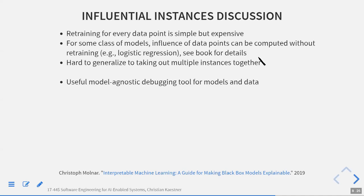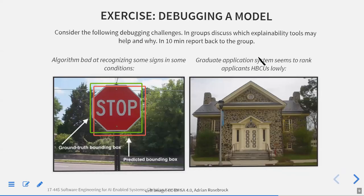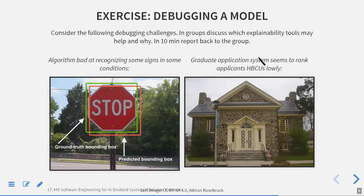This approach can work for cheap-to-train models — run it overnight, get a report, use it for debugging. For certain model classes like linear regression and logistic regression, people have found ways to estimate the influence of a data point without retraining. Otherwise, retraining cost is the main limitation. So those are all the techniques: inherently interpretable models, global surrogates, local surrogates, LIME, partial dependence plots, feature influence, SHAP values, counterfactual examples, anchors, prototypes, and influential instances.